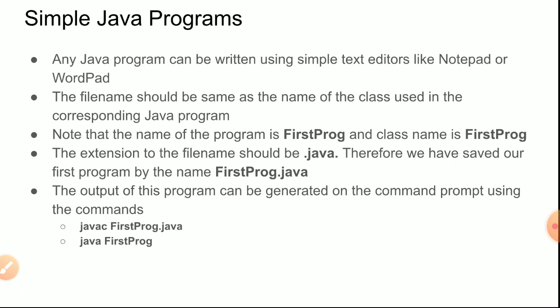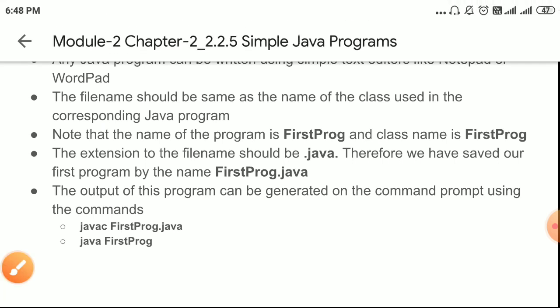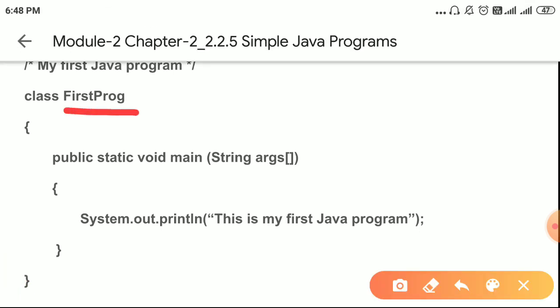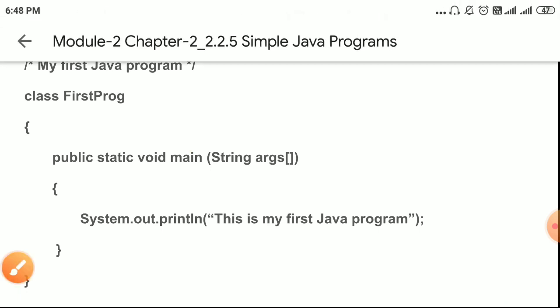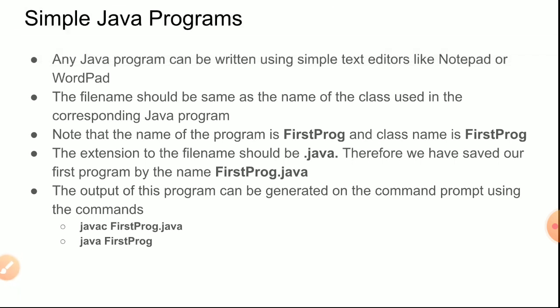Save the file as 'FirstProc.java' — note that the name of the program is 'FirstProc' and the class name is 'FirstProc'. Class name and file name should be the same. The main class is the class that contains the main method — so wherever you see the main method, that class is the main class. Here, 'FirstProc' is the main class. The file extension must be .java.